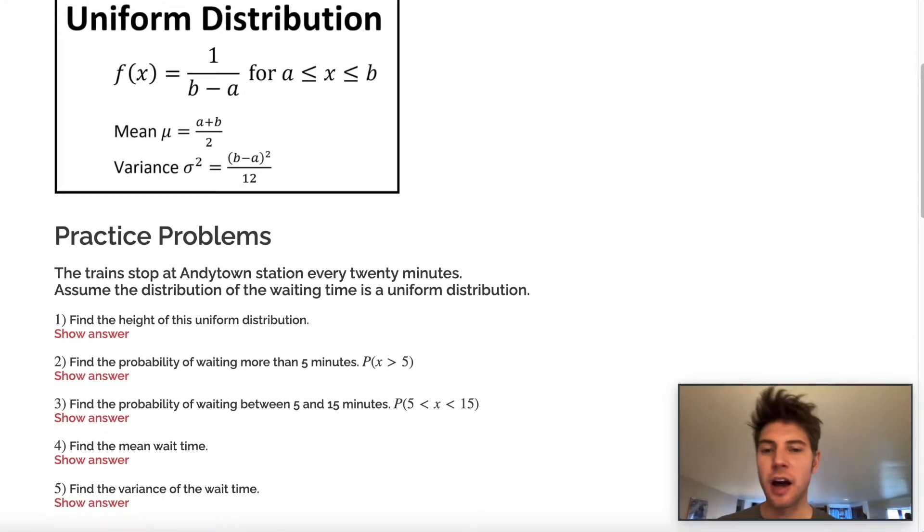The trains stop at Andytown station every 20 minutes. Assume the distribution of the waiting time is a uniform distribution. So find the height of this uniform distribution. Uniform distribution, the area of them always equals one. That's the one key important thing here.